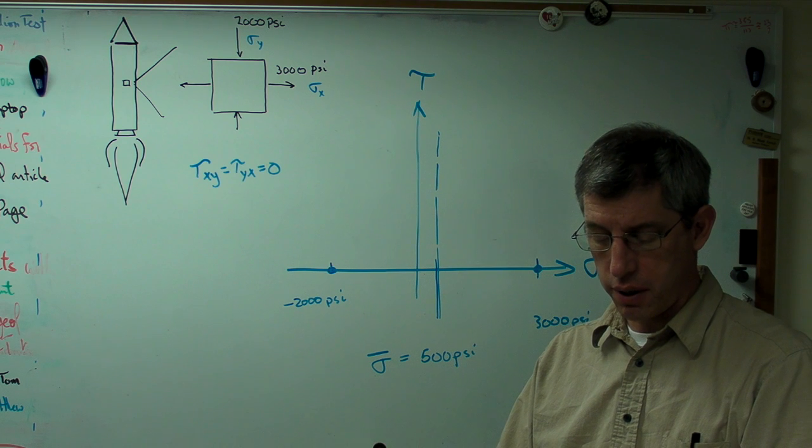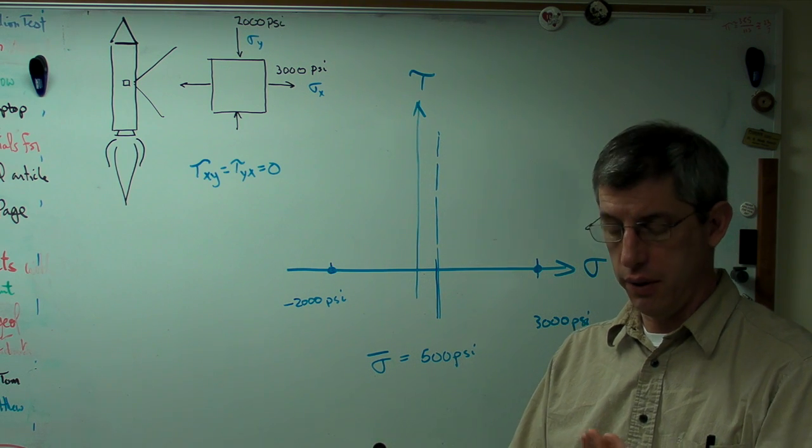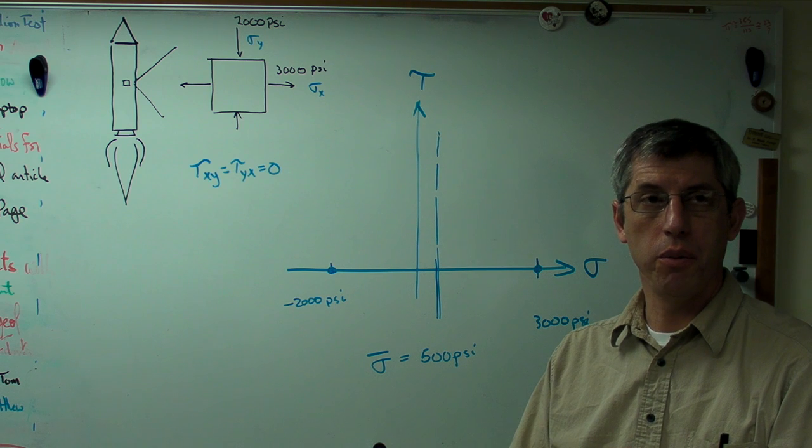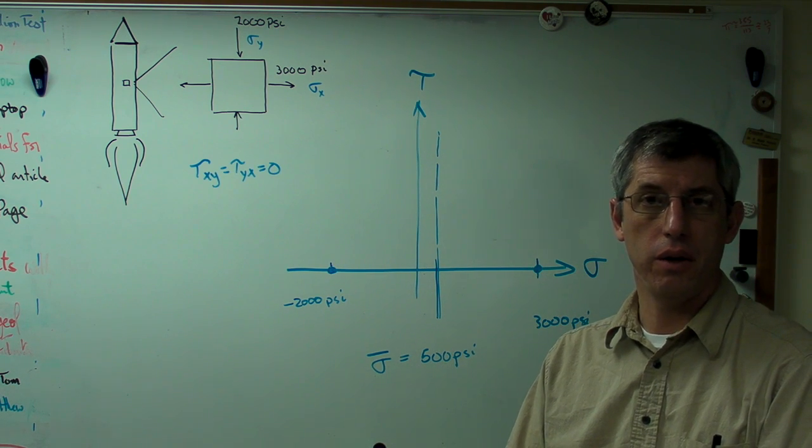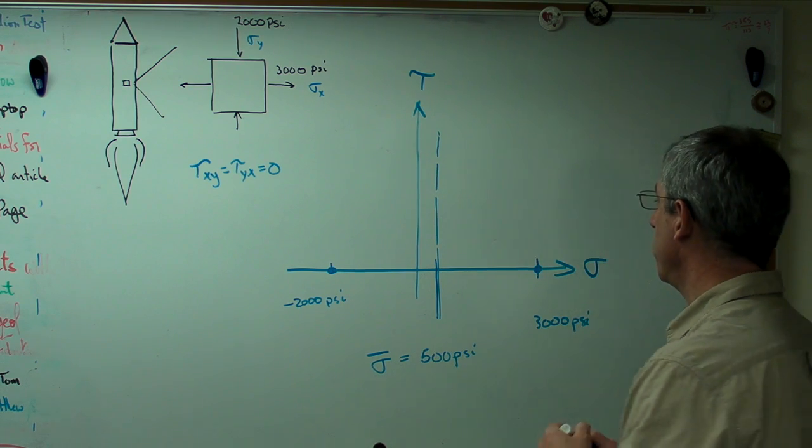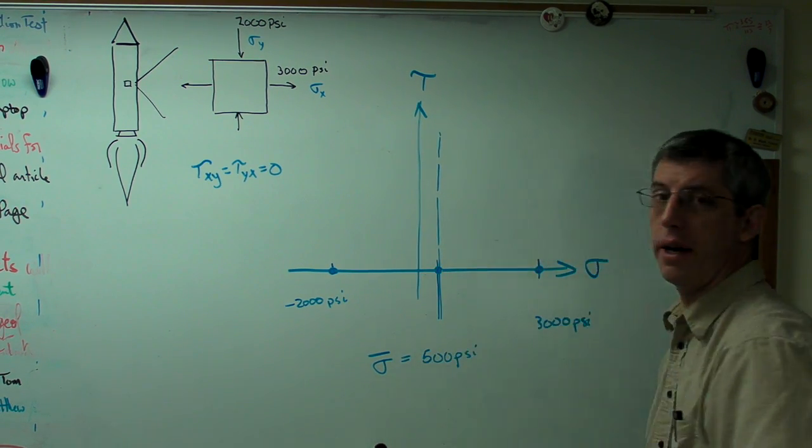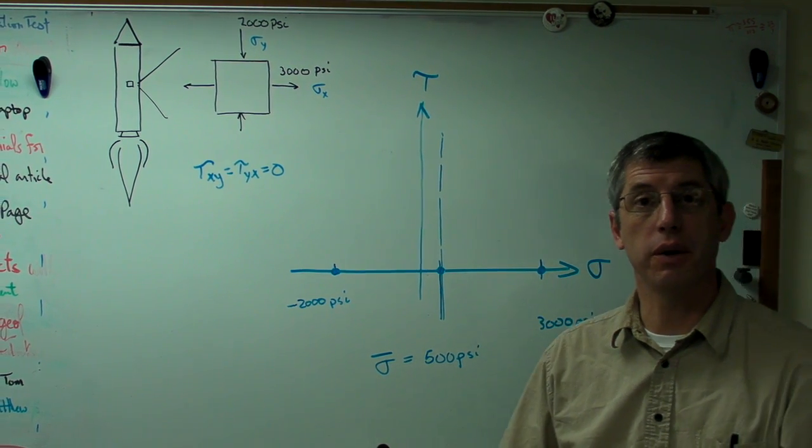Mohr's circle depends on you knowing basically three things. You need to know two endpoints, and from that, you're going to get a center point and a radius. So here's my center point.